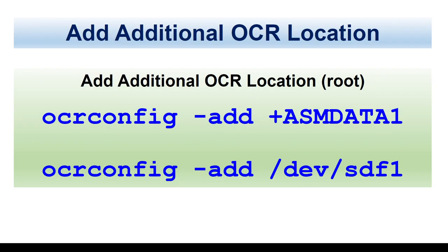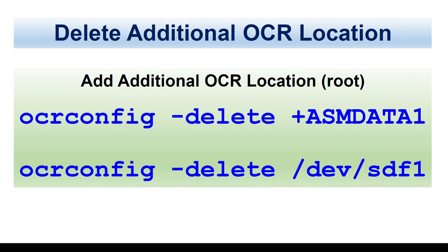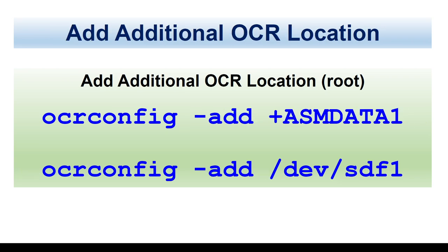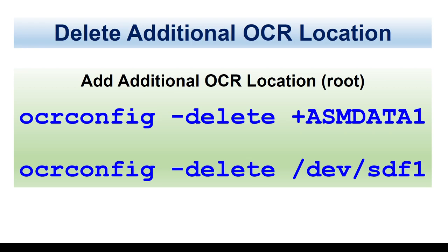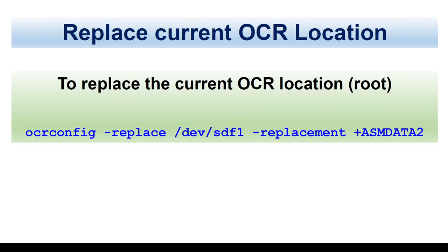If you want to add a new OCR location, you will say OCR config add with the location you want. You can have five OCR locations. If you want to delete, you will use delete. If you want to replace an existing one, you will say OCR config replace and specify which location you want to replace. Remember: if there is only one OCR location, you cannot replace it — Oracle allows you to have up to five OCR locations.